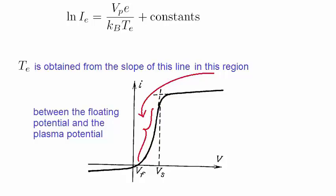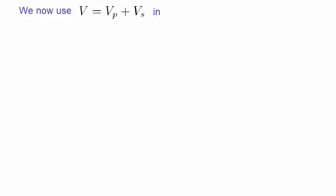Let's now use the expression for the voltage V in terms of Vp and Vs that we obtained earlier, in the equation for the electron current. The equation changes to this form.